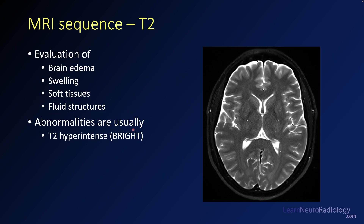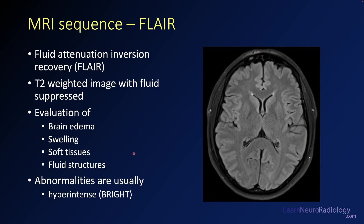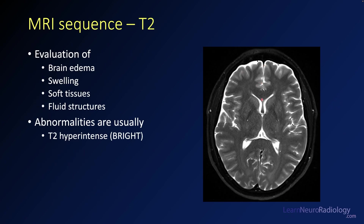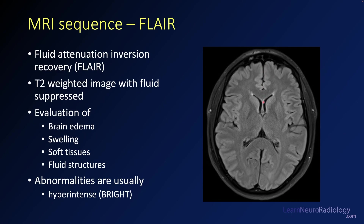The T2 sequence is an excellent way of looking at water content — water tends to be bright. The CSF appears bright in the ventricles, and anywhere there's edema or brain swelling will be abnormally bright. Abnormalities on T2 are usually bright. A lot of times we'll make T2 even more useful by removing the CSF signal, which is what FLAIR does — the water content of the CSF is subtracted, making it easier to see abnormalities adjacent to the CSF and in the parenchyma.